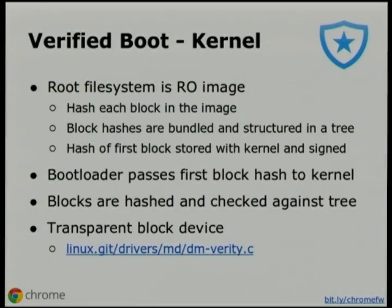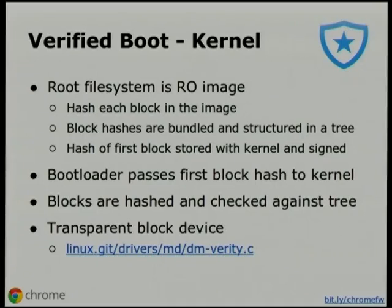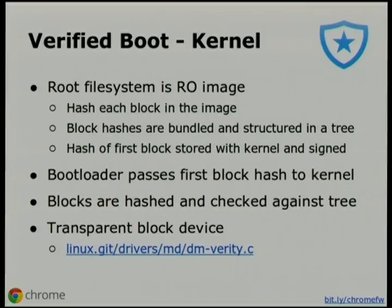With the read-only firmware that starts up, it verifies any signed read-write firmware that might be updated, and then that verifies a kernel from the disk. There's also an implementation in U-Boot that we've pushed upstream. This has a kernel component as well. Our root file system on Chrome OS is actually read-only. When we create that read-only image, every block is hashed and all those hashes are bundled up and stored in a tree. The hash of the first block in that tree is stored with the kernel itself and is signed. When the kernel comes up, every block that is read is hashed and checked against the tree. You can structure the tree so you walk down it as you're booting so you don't waste time. Once a block has been read, hashed, and stored in the page cache, you don't have to do it again. This work was pushed upstream as the DM Verity module.